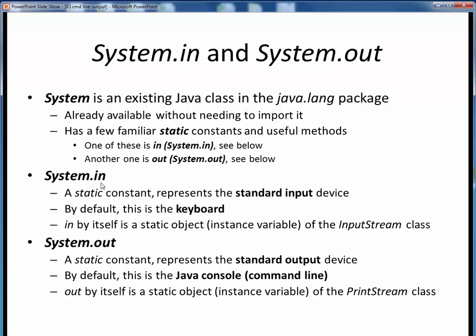The other such static constant is System.out, and this represents Java's standard output device, which by default is the Java console or command line. Similarly, out is a static instance variable of the System class, and by itself is of type PrintStream, which is still another Java class. Similarly, for practical purposes, we refer to it as System.out, and no doubt we recognize that this is the beginnings of Java's standard print methods.